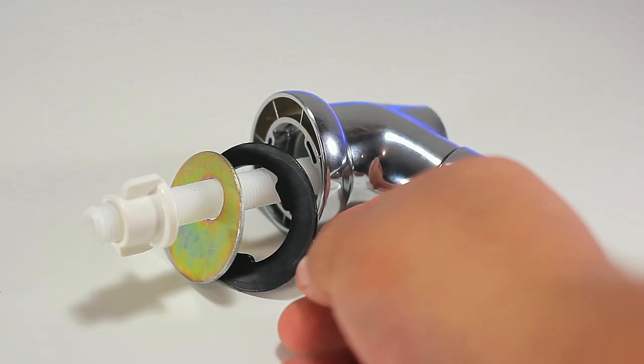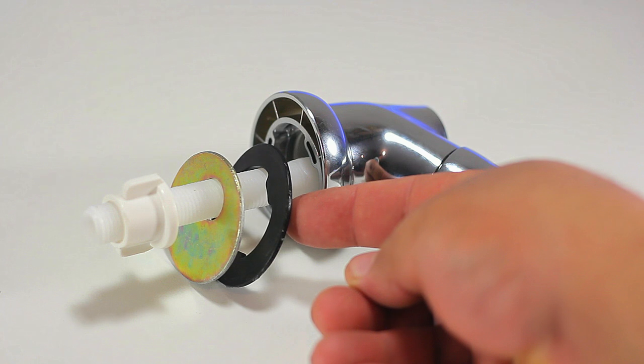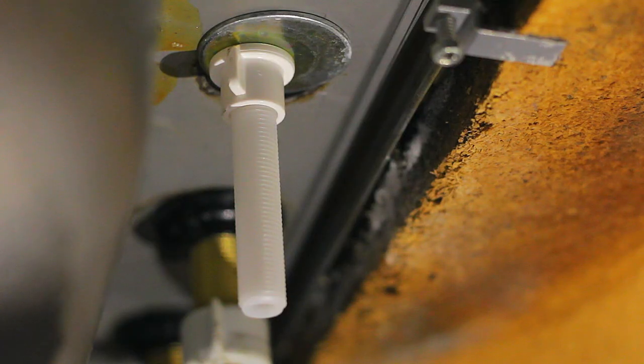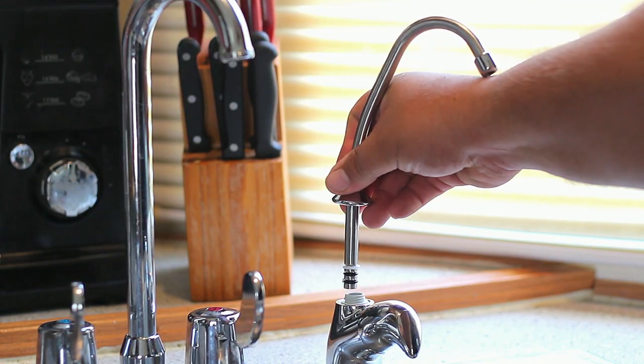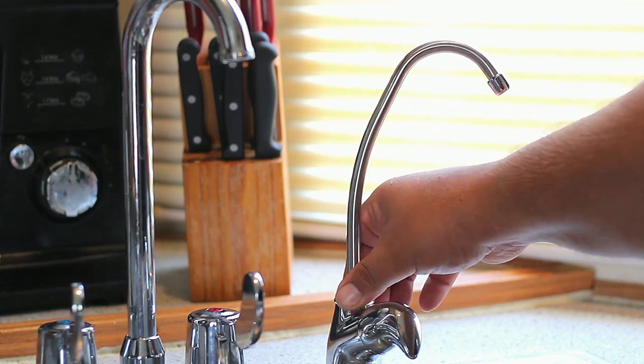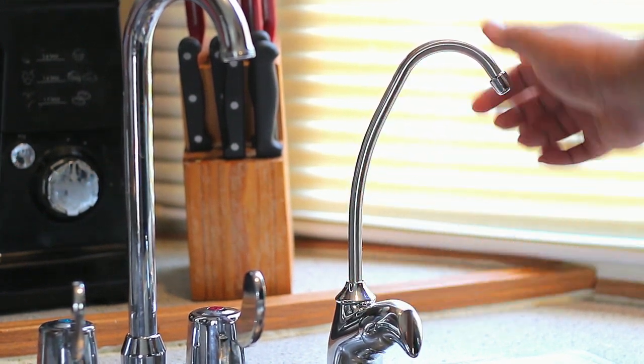Once we have the hole, we want to install the faucet, having the rubber side on the top part of the sink and the gold plated metal under the sink. Once it's correctly placed, we can tighten the plastic nut until fastened. Now we can place the top part of the faucet and tighten.